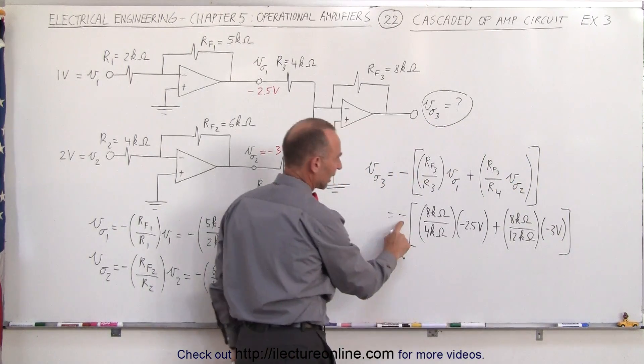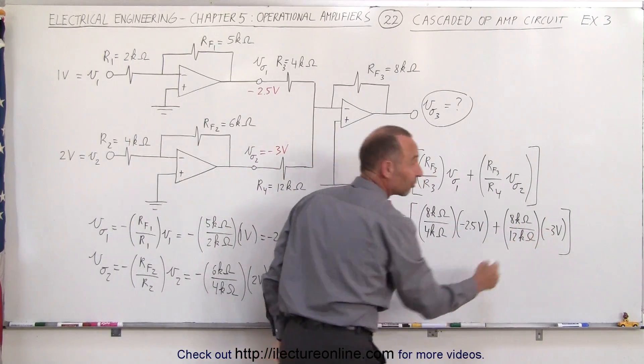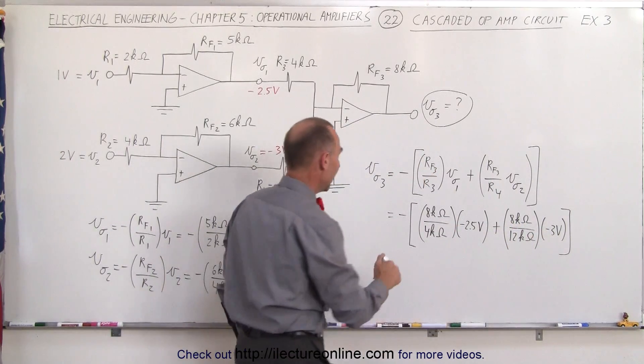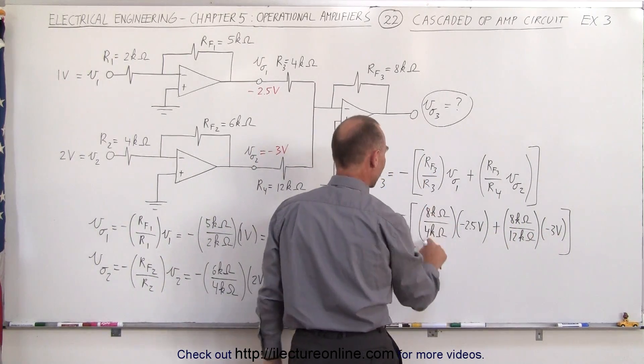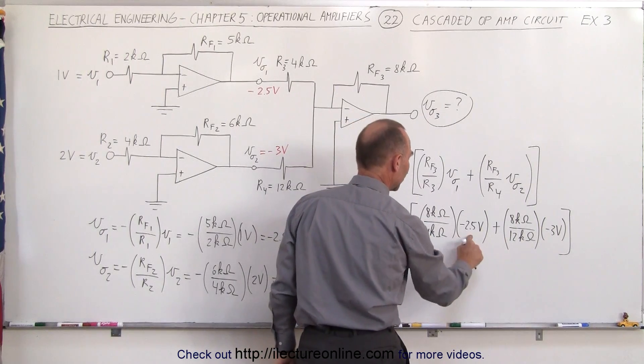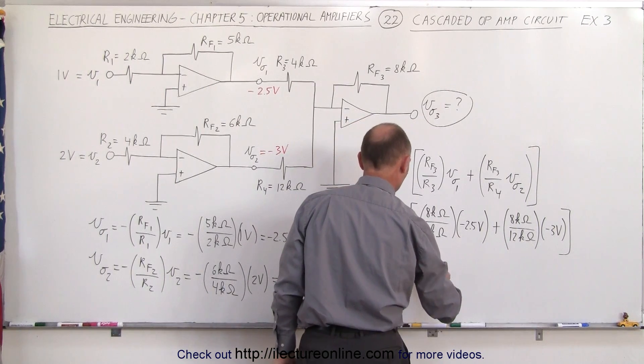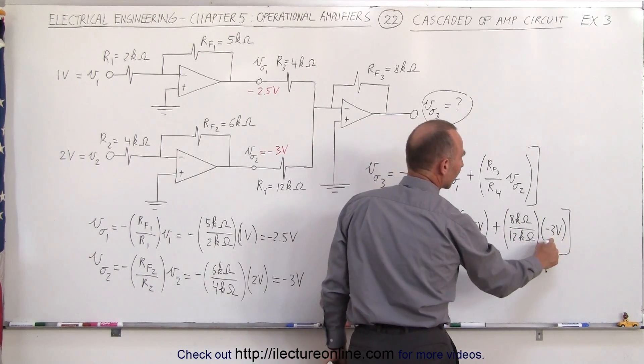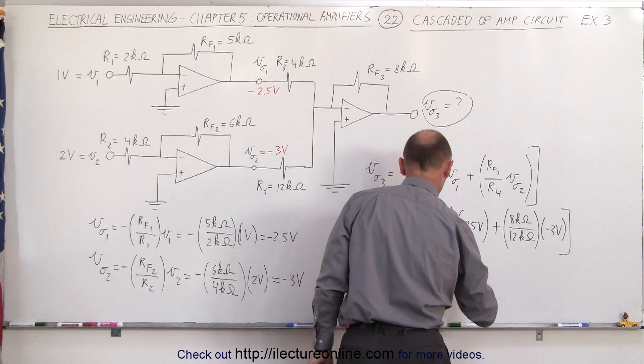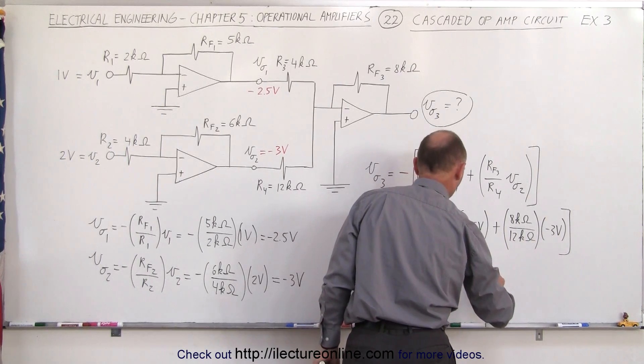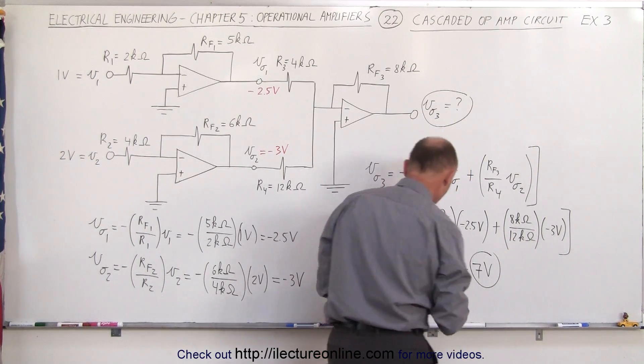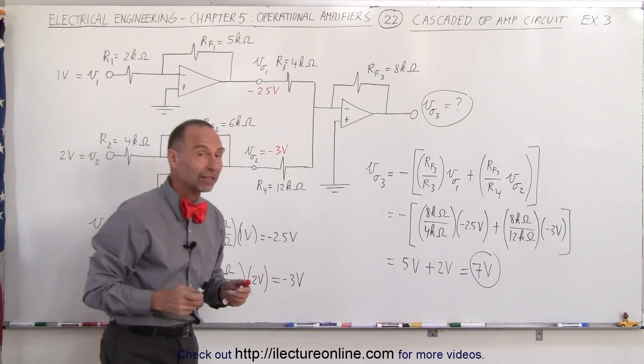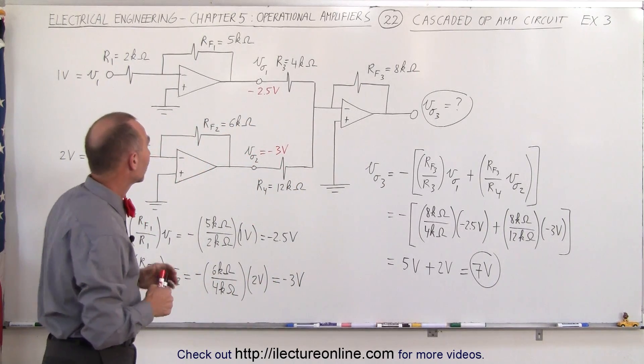Right away you can see that this negative sign will negate these two negative signs so they'll both become positive. This is equal to 8 divided by 4 is 2, 2 times 2.5 which is 5 volts, plus 8 divided by 12 which is 2/3, times 3 which is 2 volts. Plus 2 volts which means we have a total of 7 volt output.